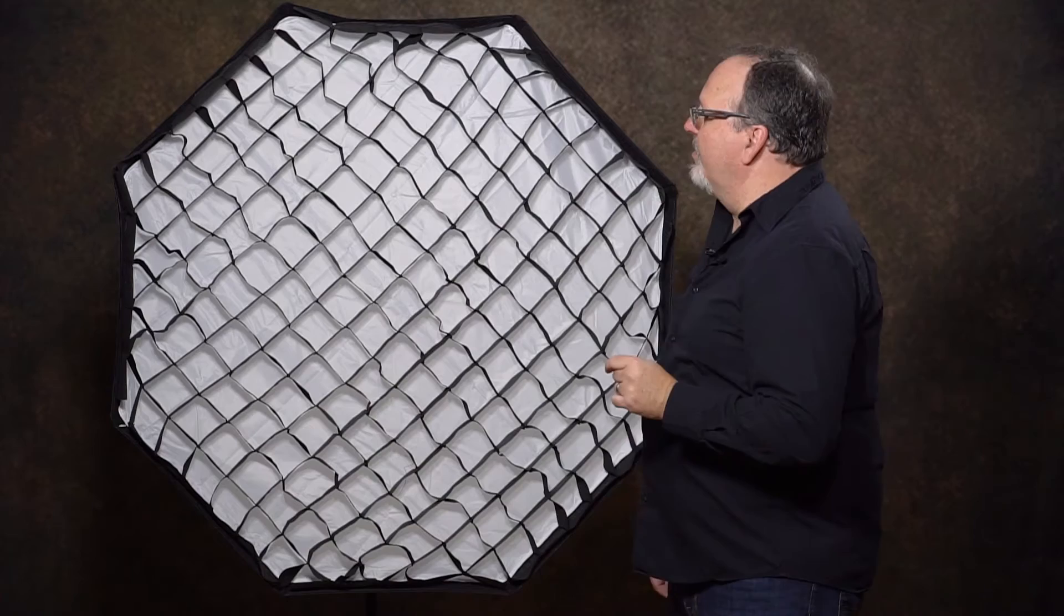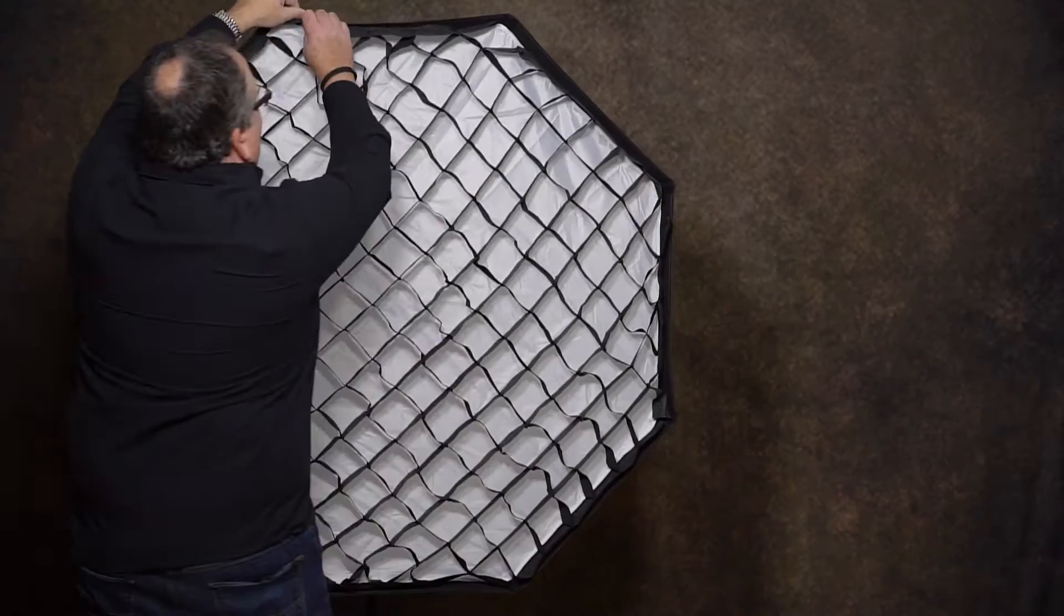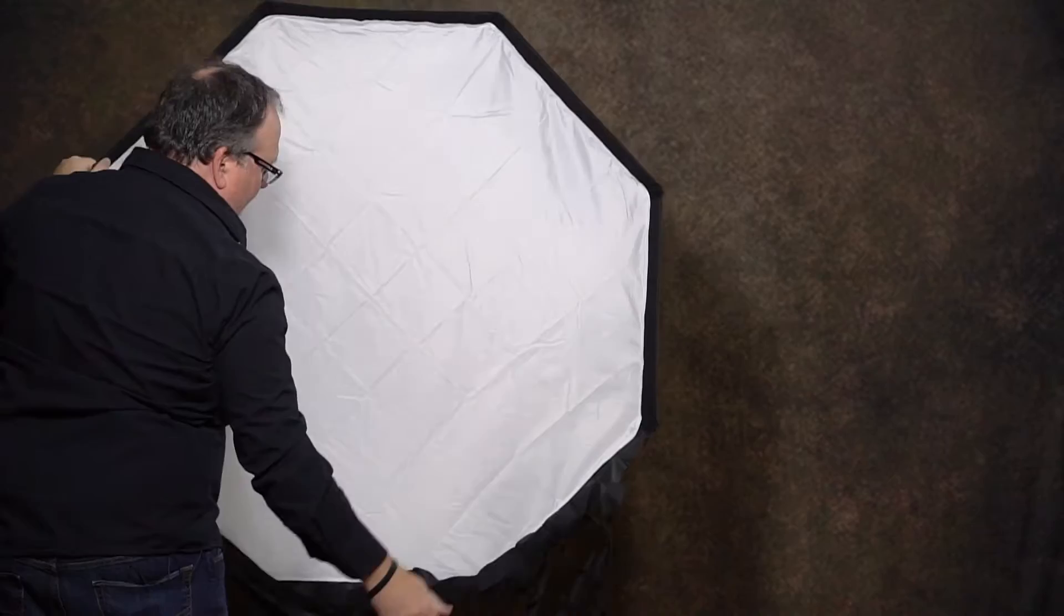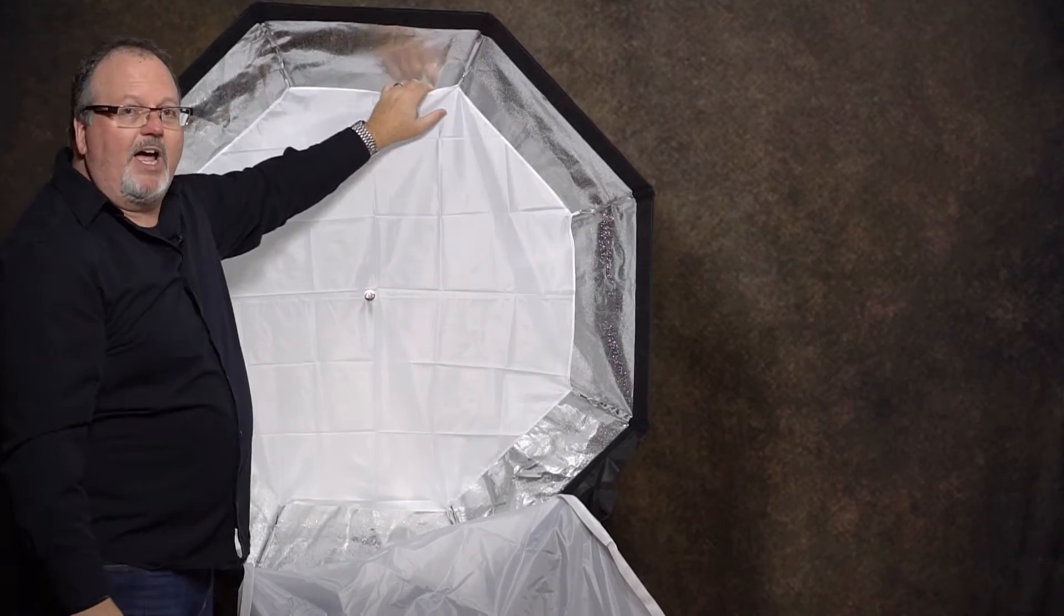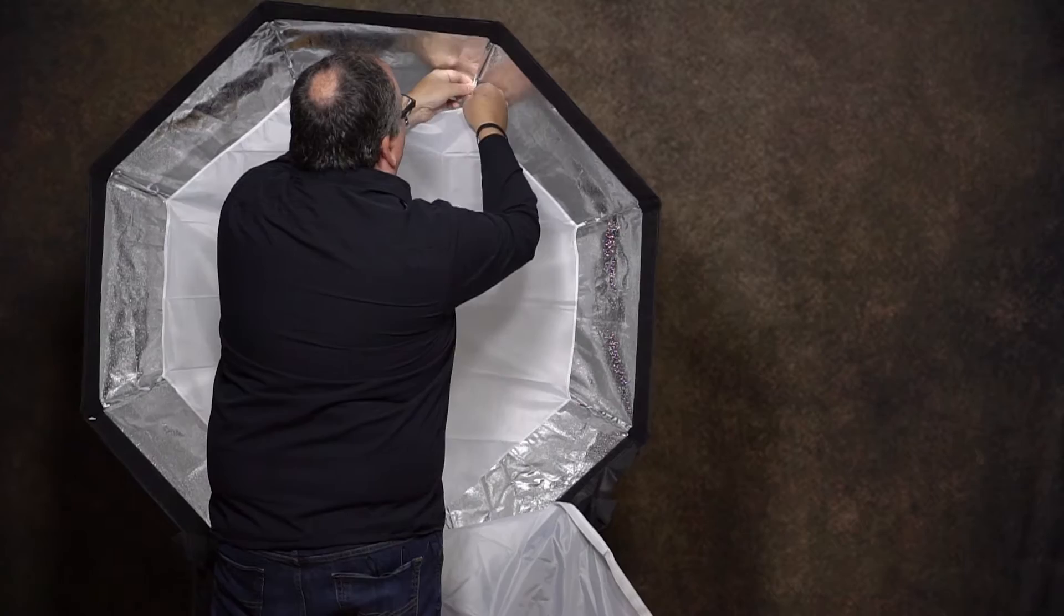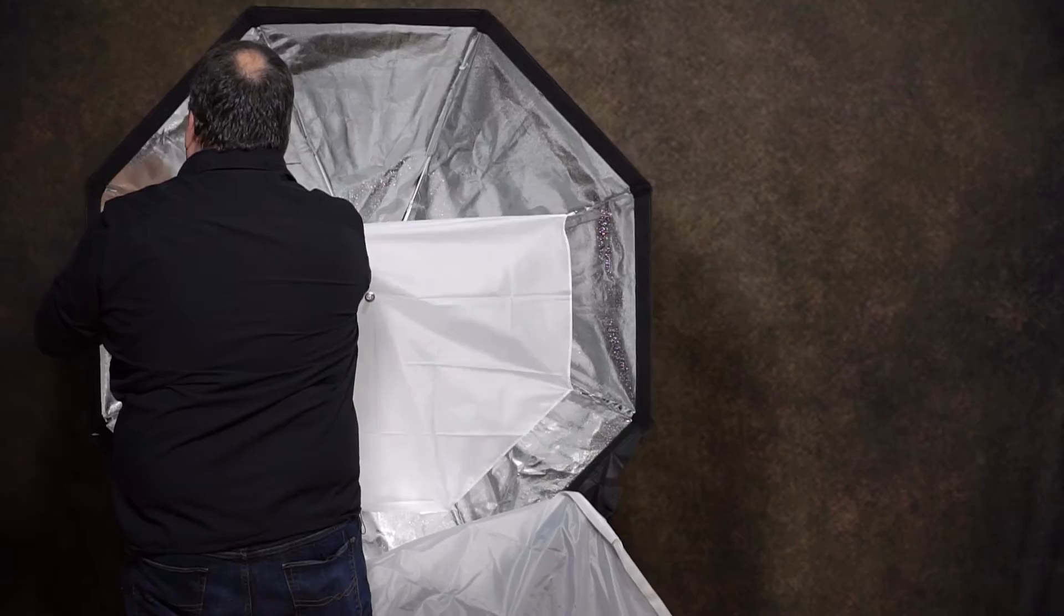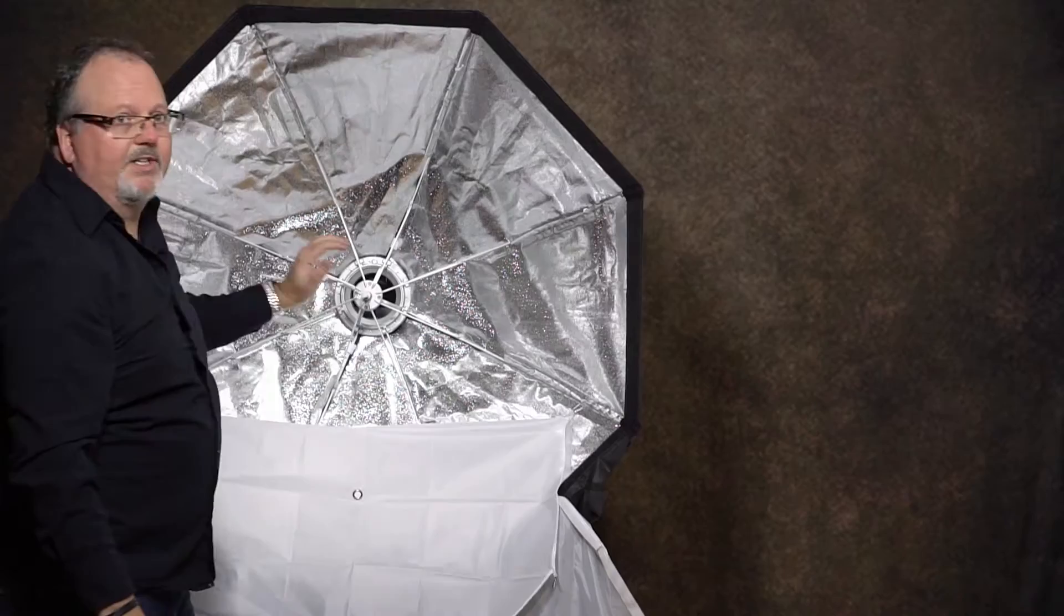So let's take a look at some of the interior features on this. As a matter of fact, let's tear one apart. The grid's really easy to take out as well as the outer diffusion panel. Why? Velcro. Super industrial strength Velcro. The inner baffle is clipped in. Just unclip. Tadam. And that gets us into the interior of the box.